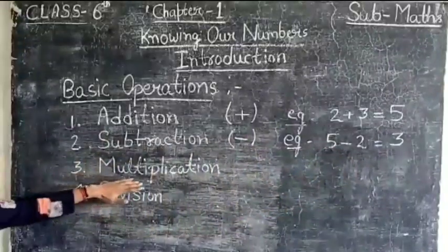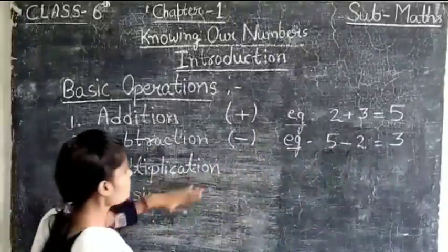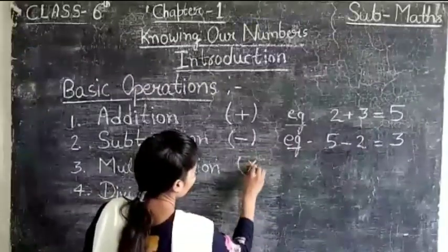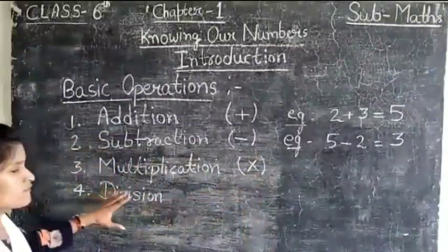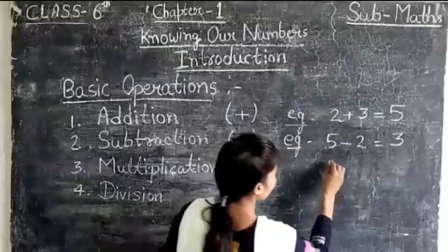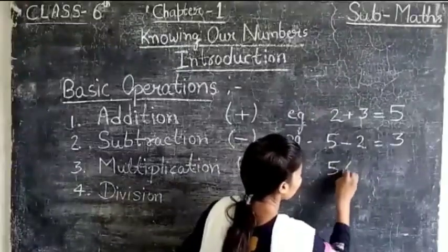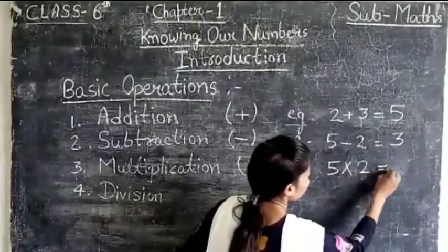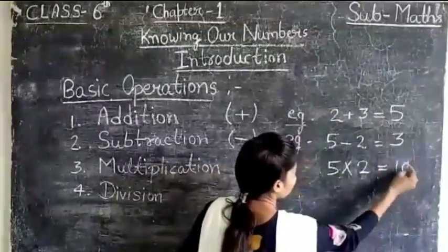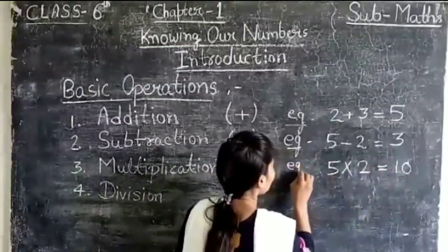So now we discuss multiplication. The symbol of multiplication is this. If we multiply two digits, that means 5 multiplied by 2, we get the digit 10. This is the example of multiplication.